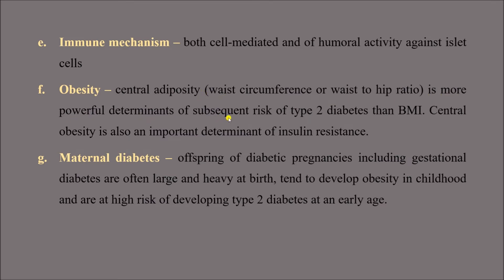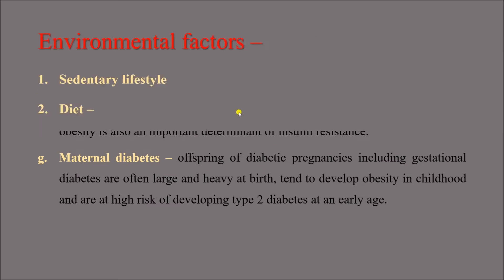Central obesity is a more powerful determinant of subsequent risk of type 2 diabetes than BMI — the BMI may be in the normal or pre-obese range but central obesity is what matters most. Central obesity is also an important determinant of insulin resistance. Maternal diabetes: offspring of diabetic pregnancies, including gestational diabetes, are often large and heavy at birth — a condition known as macrosomia. These children tend to develop obesity in childhood and are at high risk of developing type 2 diabetes at an early age.